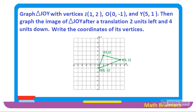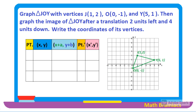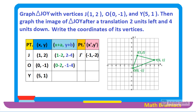Let us connect the dots with a straight line. Now let us draw a table so that everything will be clear. We write the points and their ordered pairs. Since we are translating 2 units left, we subtract 2 from the x coordinate, and 4 units down, we subtract 4 from the y coordinate. For point J: 1 − 2 = −1 for x, and 2 − 4 = −2 for y. For point O: 0 − 2 = −2 for x, and −1 − 4 = −5 for y. So O prime is (−2, −5).